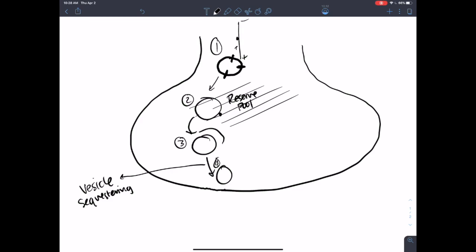And then I'm actually going to say that this process here is vesicle sequestering. Then once it gets towards the membrane, it's kind of associated with the membrane. And that's via these SNARE complexes. We say that this synaptic vesicle at number four is docked. So this is a docked synaptic vesicle. But that doesn't mean that it's ready to be released.